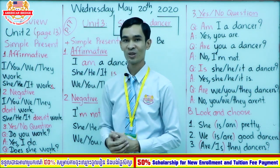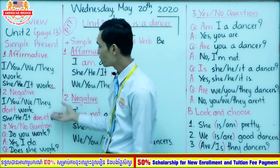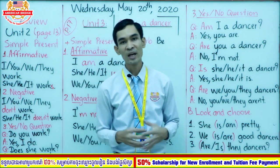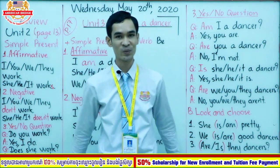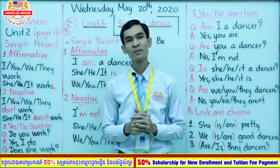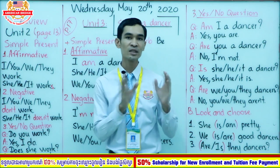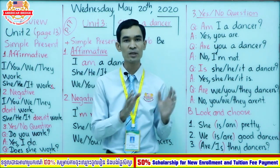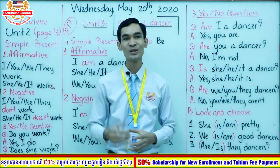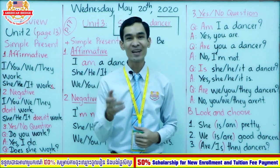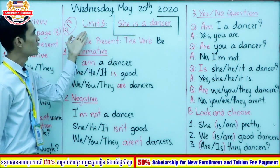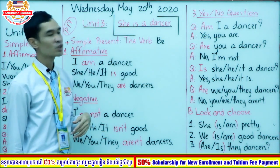Okay, so now we finish our review part. Let's go on to our new lesson today. We are going to study Unit 3. After watching this video you will know simple present used with 'be', and you will know what kind of subject uses 'am', 'is', or 'are'. You can open the book to page 17 — Unit 3: 'She is a dancer.'